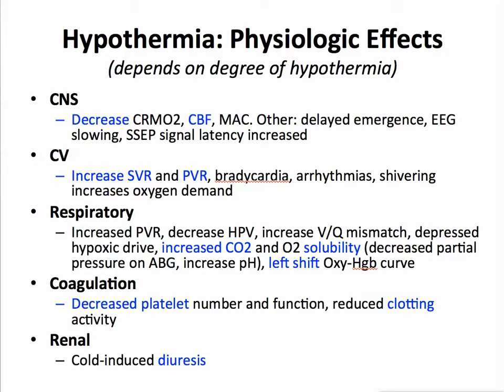The cardiovascular system: there's an increase in systemic vascular resistance and pulmonary vascular resistance. With mild hypothermia, catecholamines go up — norepinephrine levels go up, stress hormones. As the norepinephrine goes up, SVR goes up and PVR goes up. For mild levels of hypothermia, think increased systemic vascular resistance and pulmonary vascular resistance. In the patient with pulmonary hypertension, this could be really bad. In the patient with heart failure whose SVR goes up, that could be bad for that heart also.